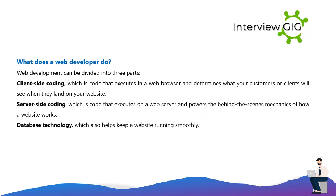Web development can be divided into three parts: client-side coding, which is code that executes in the web browser and determines what your customers or clients will see when they land on your website; server-side coding, which is code that executes on a web server and powers the behind-the-scenes mechanics of how a website works; and database technology, which also helps keep a website running smoothly.